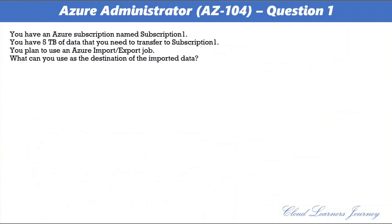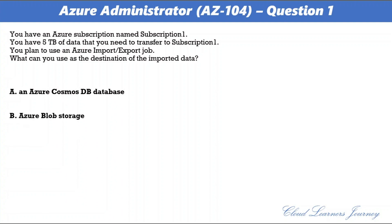Question 1. You have an Azure subscription named Subscription1. You have 5 TB of data that you need to transfer to Subscription1. You plan to use an Azure Import Export job. What can you use as the destination of the imported data? The options are: A. An Azure Cosmos DB database. B. Azure Blob Storage.